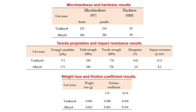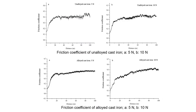The weight loss and the friction coefficient decrease with the addition of the alloying elements. In the graphs, the friction of the un-alloyed cast iron is more fluctuated for the two applied loads, 5 N and 10 N. The friction coefficient of the alloyed cast iron presents less fluctuation.